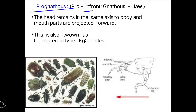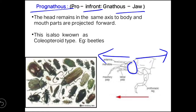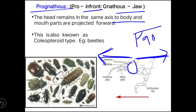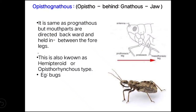Next is prognathous. Pro means in front and gnathus means jaw. In this type, the head remains in the same axis as the body, not at 90 degrees as in grasshoppers. The mouth parts are projected forward. This is also known as the coleopteran type. Example: beetles.